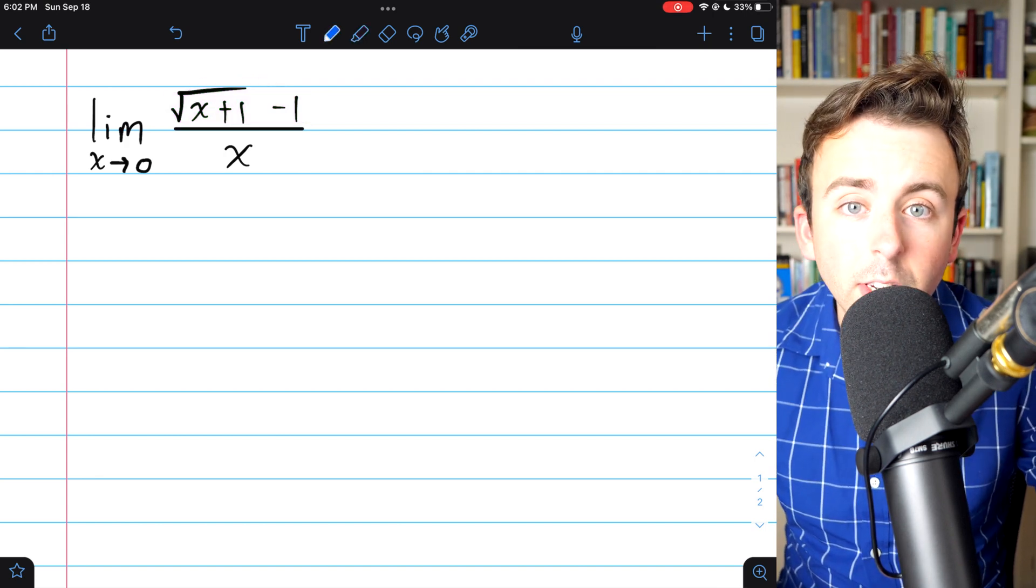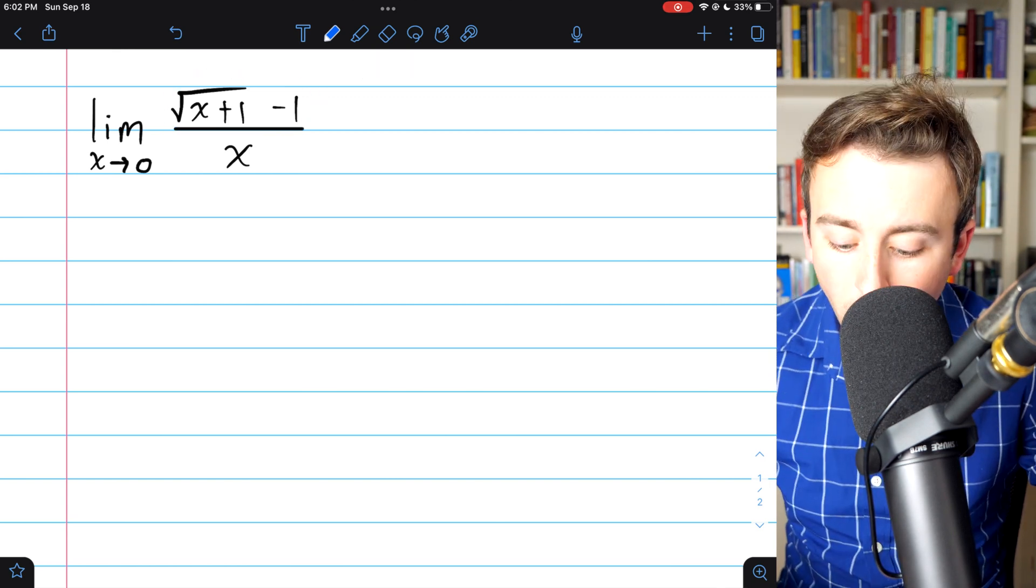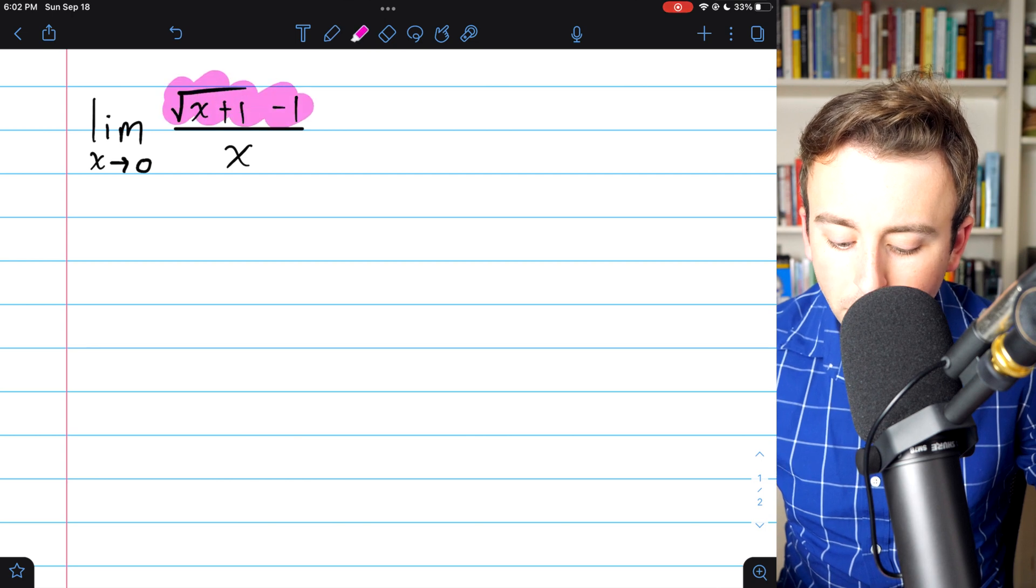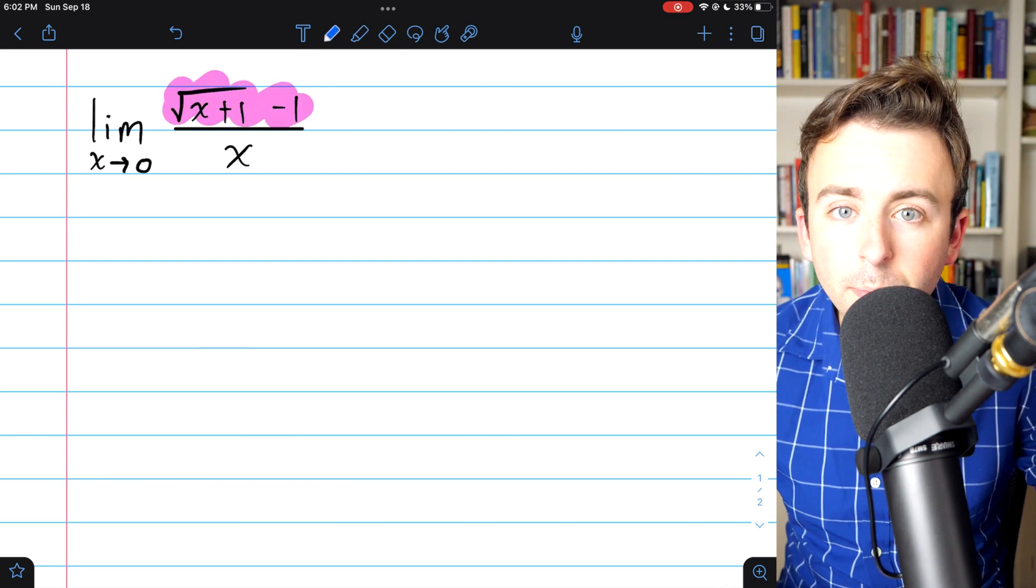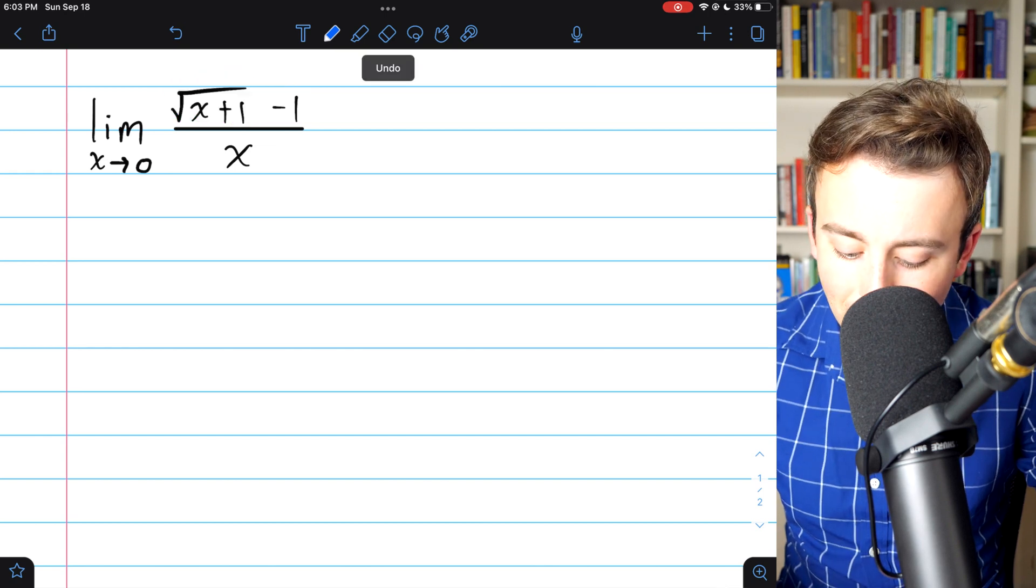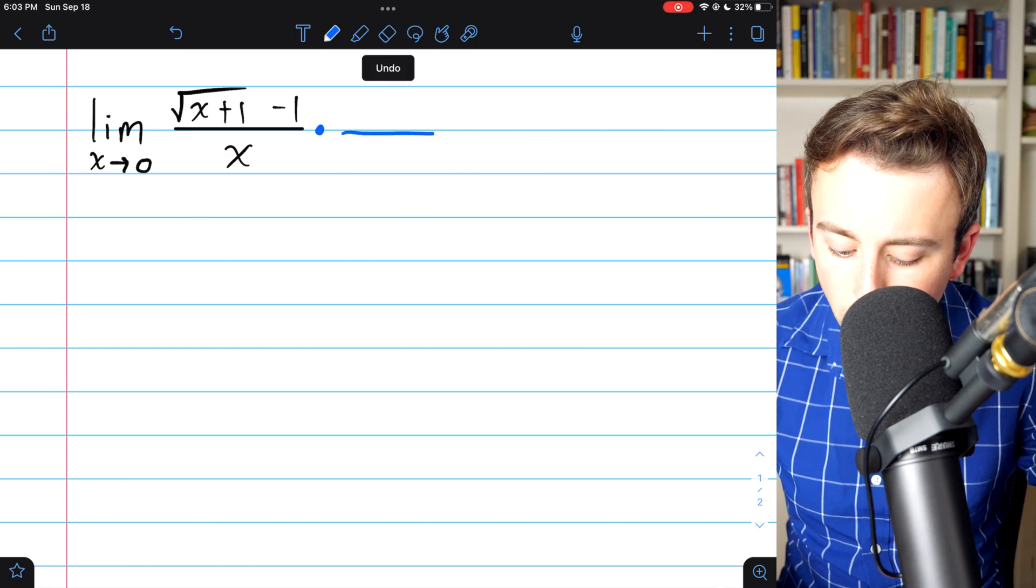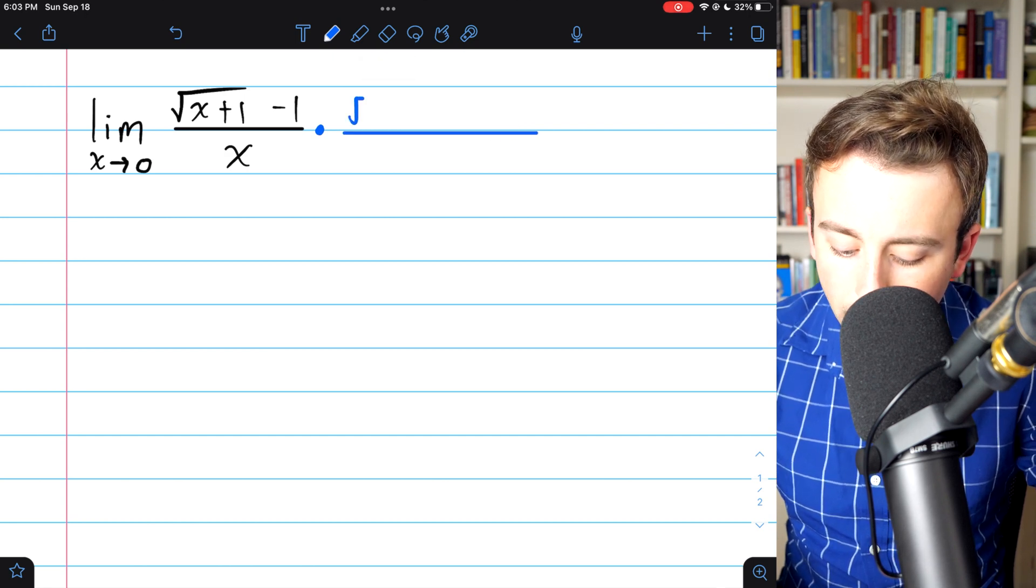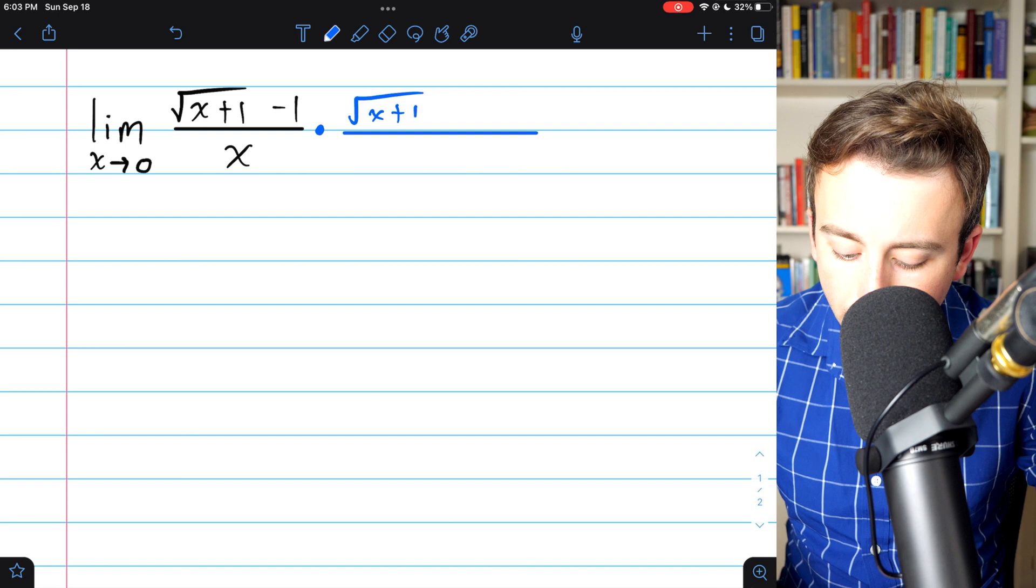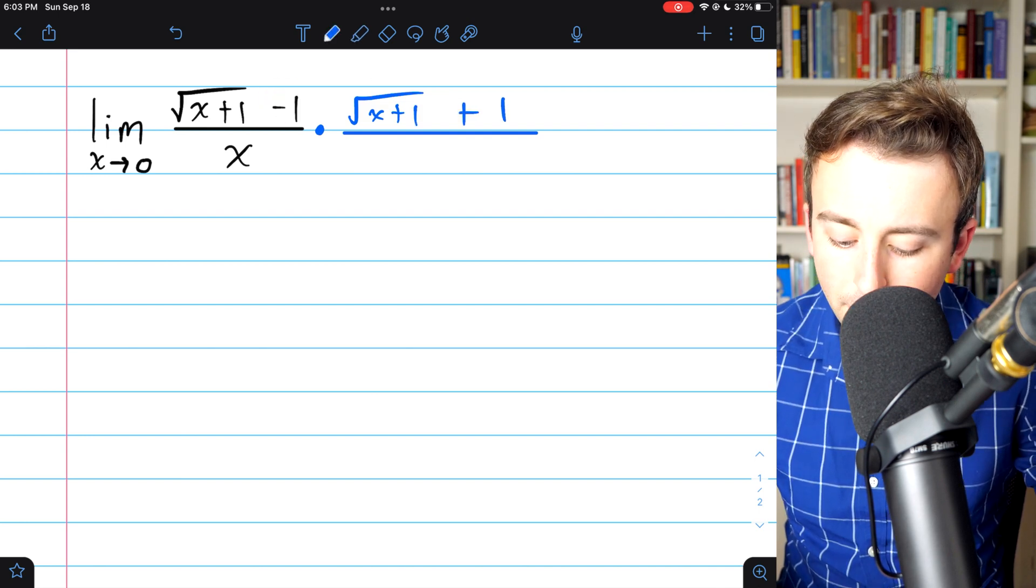In this situation, in order to rationalize the numerator, all we have to do is multiply by the conjugate of the binomial term that has the radical. The conjugate of a binomial just means flip the sign in the middle. So the conjugate, in this case, is going to be the square root of x plus 1, and then instead of minus 1, we'll have plus 1.